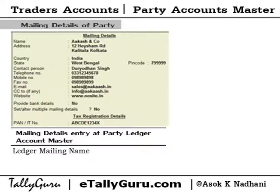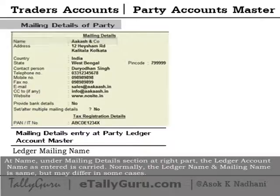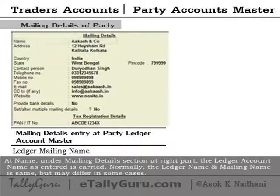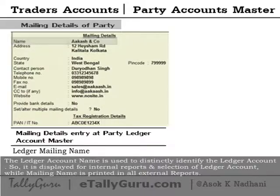Ledger mailing name: at 'Name' under the Mailing Details section at the right part, the ledger account name as entered is carried. Normally the ledger name and mailing name are the same, but may differ in some cases. The ledger account name is used to distinctly identify the ledger account.